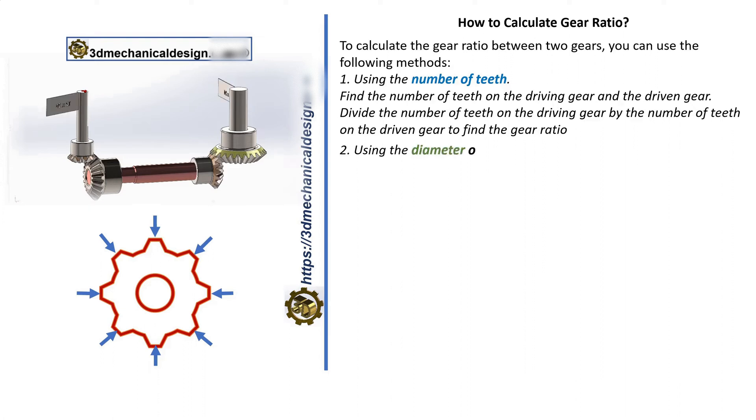Second, using the diameter or radius: Calculate the gear ratio by dividing the diameter or radius of the input gear by that of the output gear.